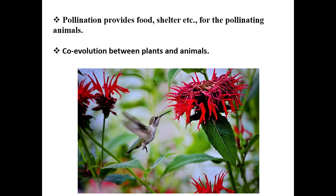The pollination phenomenon involves physical structures — that is, the flower — and biotic pollinating agents. The pollinating agents need food and shelter, so they reach the flower. By this way the pollen is transferred to the stigma. Hence pollination provides food and shelter for the pollinating animals. This is co-evolution between plants and animals.